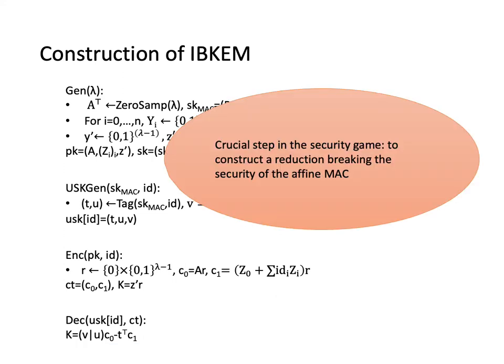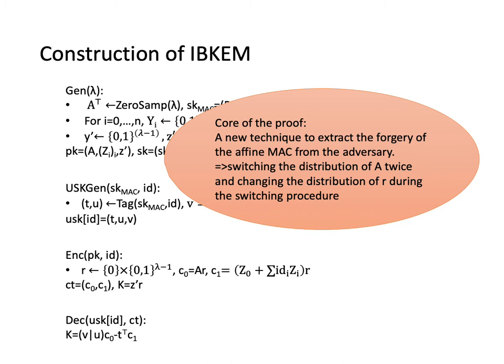The crucial step in the security game is to construct a reduction breaking the security of the underlying affine MAC. And at the core of the proof, we developed a new technique to extract the forgery of the affine MAC from the adversary. More specifically, we switched the distribution of the matrix A twice and changed the distribution of the randomness R during the switching procedure.